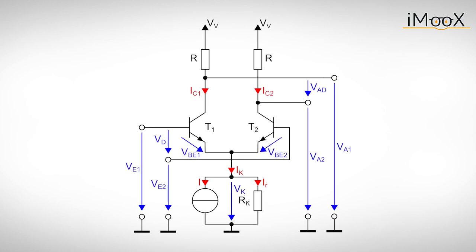Let's start with the differential mode voltage VD. We assume that the potential at the emitters is constant for differential mode. This means the small signal change of VK is zero volts. Thus, a change in differential mode voltage results in one base-emitter voltage becoming larger while the other one becomes smaller.